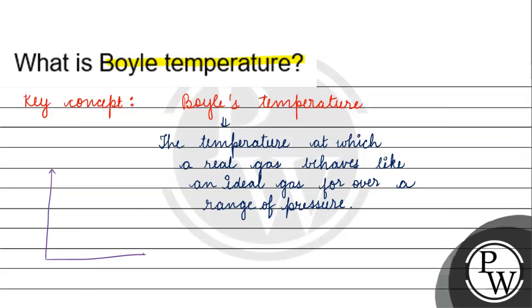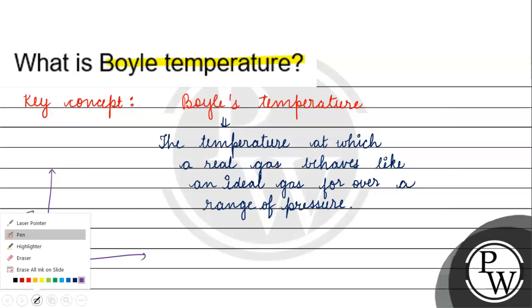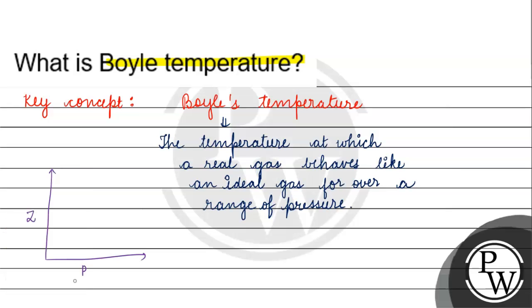Let's see the graph. We have the compressibility factor Z on one axis and pressure on the other. This line here is for an ideal gas.